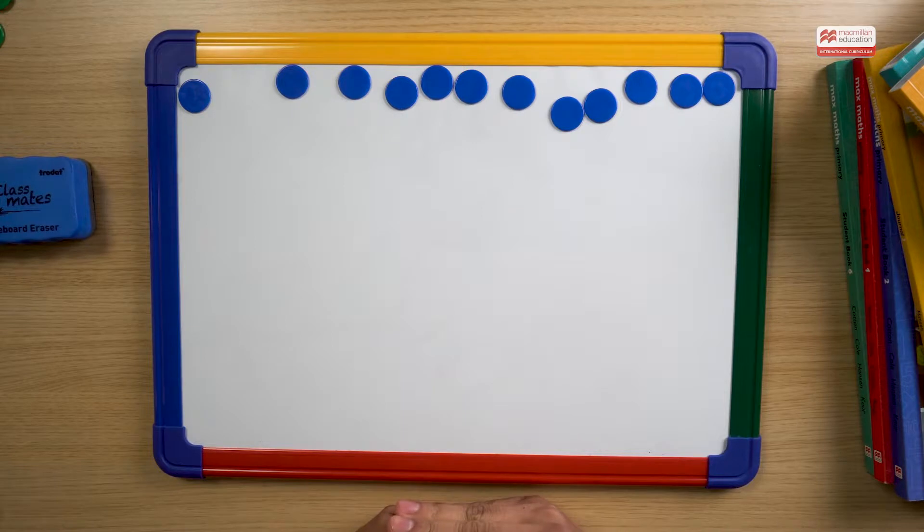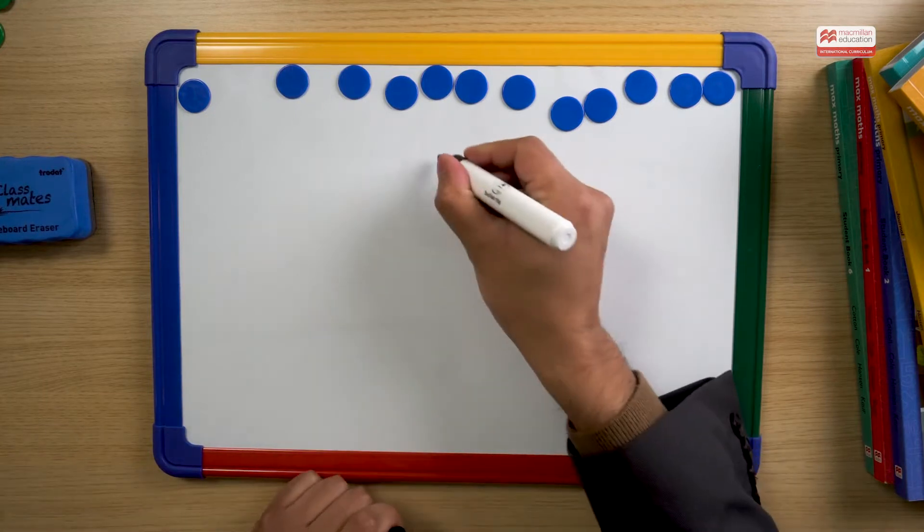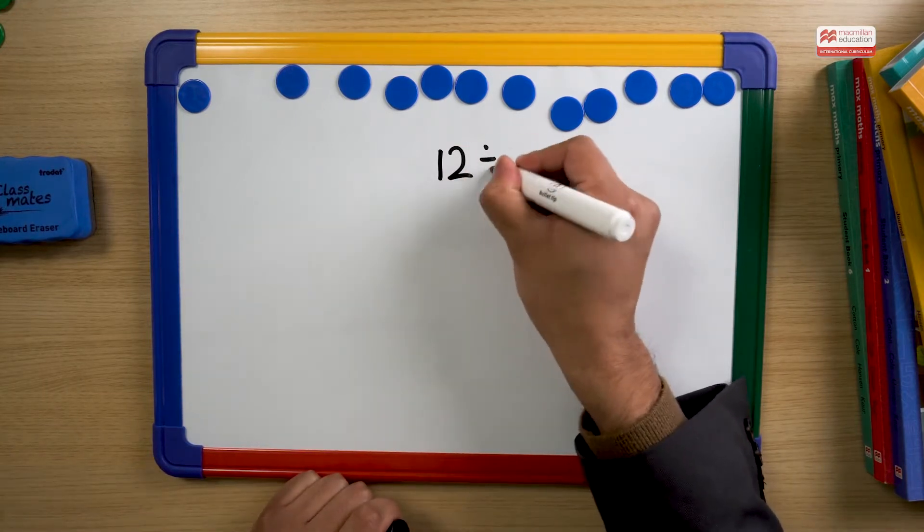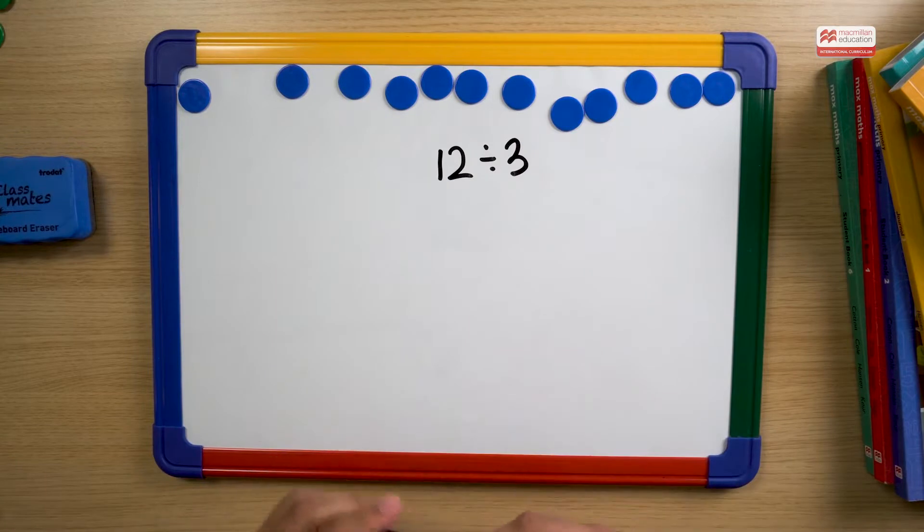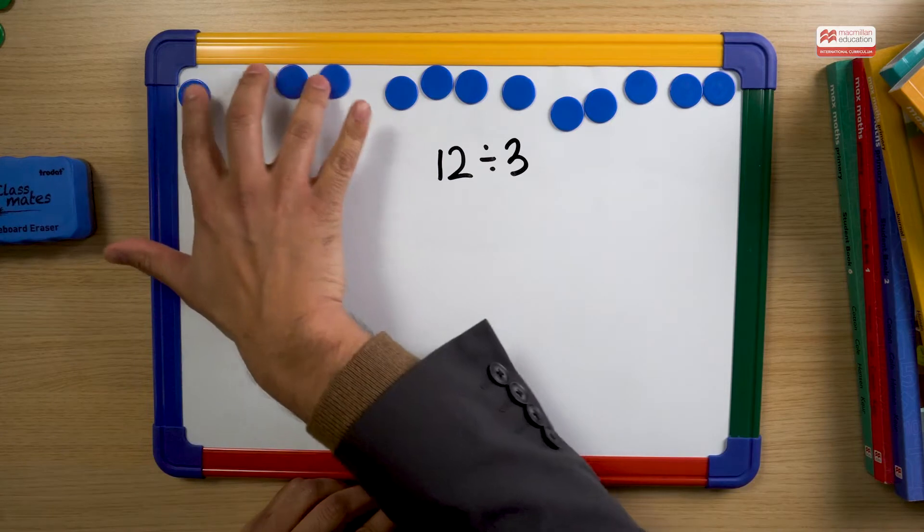In the first half of this video, we looked at dividing by sharing. And now we're going to look at the same question, 12 divided by three. But now we're going to look at this in a different way. We're going to look at it as grouping. So we can divide 12 into groups of threes.